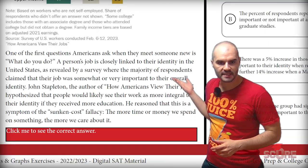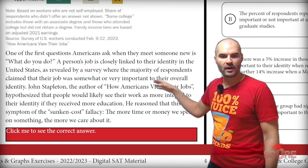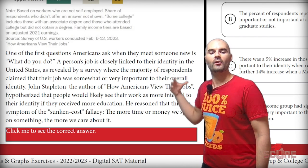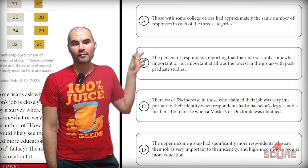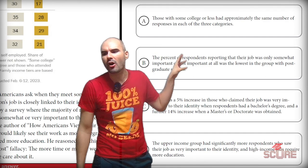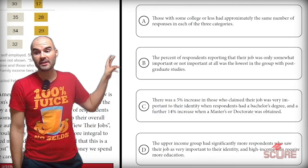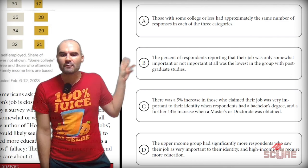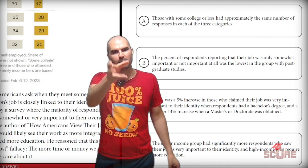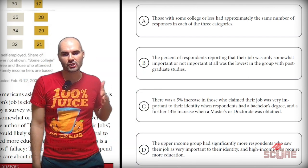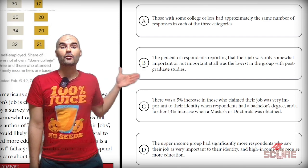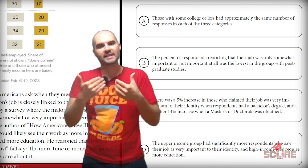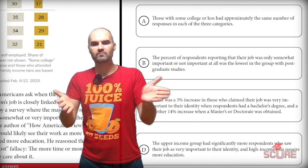The fourth question asks about John Stapleton's claim. The text says the author of 'How Americans View Their Jobs' hypothesized that people would be likely to see their work as more integral to their identity if they received more education. Answer A says those with some college or less had approximately the same number of responses in each of the three categories — that's going to be wrong because we want to focus on the 'extremely or very important' column. B focuses on those reporting their job was only somewhat or not important — wrong for the same reason. C says there was a 5% increase in those who claimed their job was very important to their identity when respondents had a bachelor's degree, and a further 14% increase when a master's or doctorate was involved. That's the answer — importance to identity continuously increases as we add education.